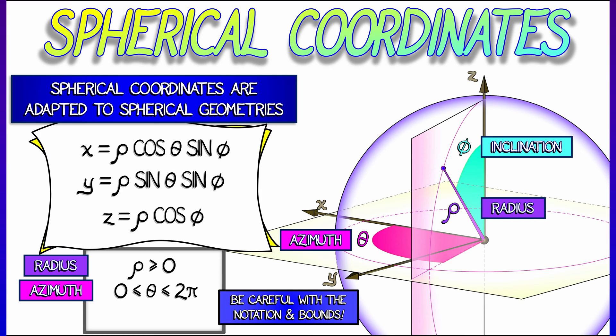But now we have this third angle, phi, the inclination that measures the angle to the z-axis, to the north pole if you like. So when phi equals zero, you're up at the north pole. You sweep all the way down to the south pole. And that is at phi equals pi.